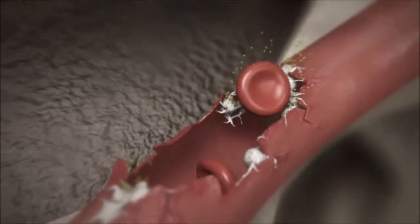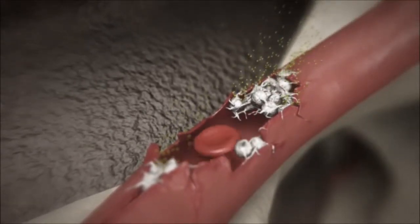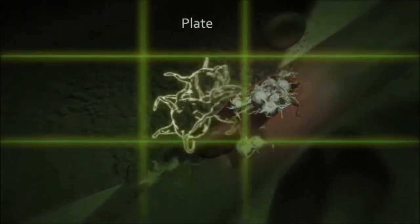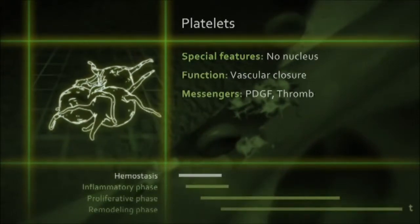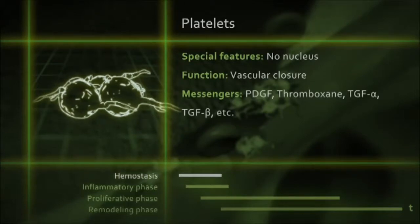Platelets release various messenger substances for cell-to-cell communication, such as thromboxane, which promotes platelet aggregation, or PDGF, platelet-derived growth factor, which stimulates the cell division of fibroblasts.